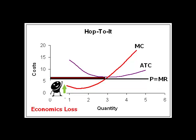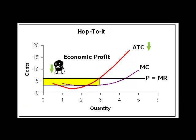He's in the loss-minimizing position because he's making an economic loss. If some of the fixed costs could disappear, then the average total cost curve would shift down. Let's say that the government suspends the licensing fee — now the average total cost curve has shifted down.